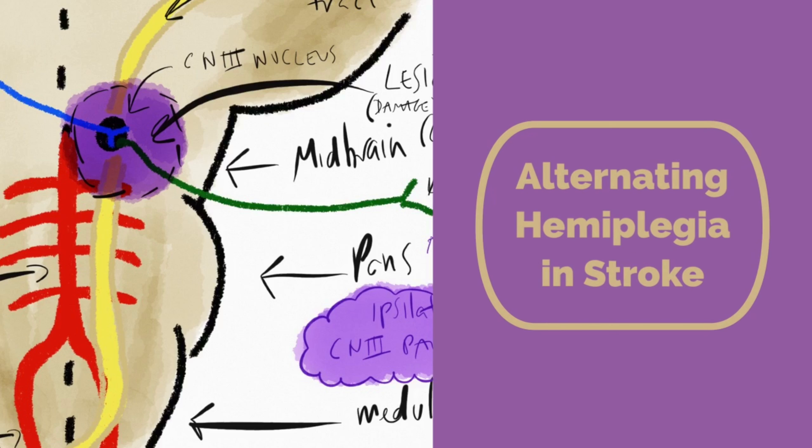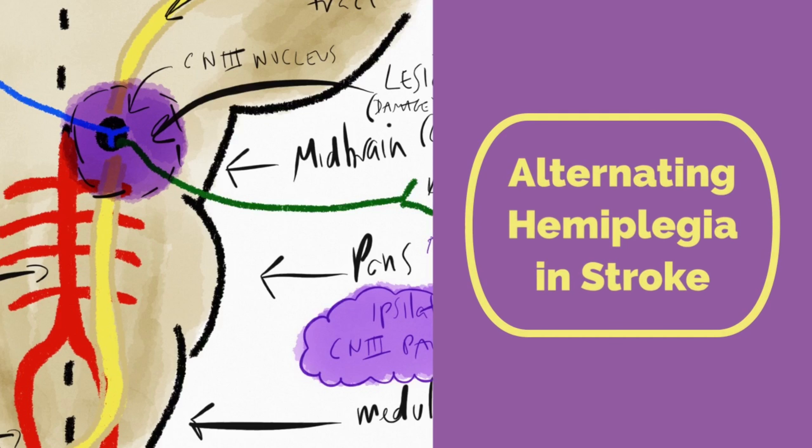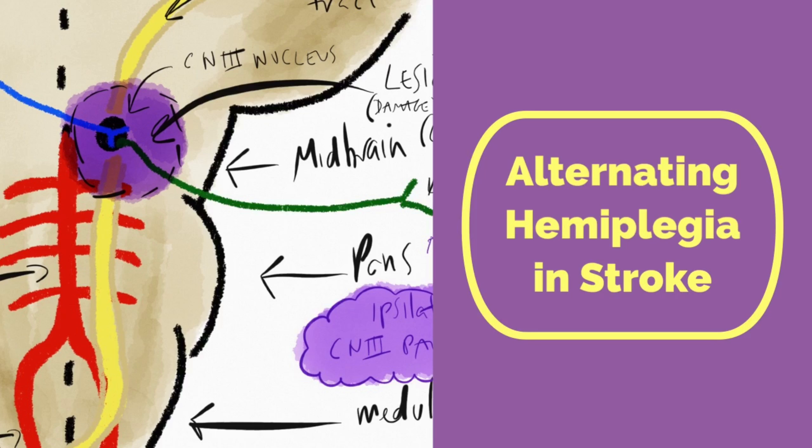Hello and welcome to this video covering alternating hemiplegia in stroke. This is a form of paralysis or weakness that has both ipsilateral and contralateral consequences of motor function, and it's all down to the anatomy.